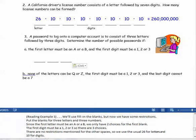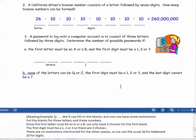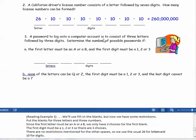Three letters, blanks for three numbers or digits. Since the first letter must be an A or B, we only have two choices for the first blank. The first digit must be a one, two, or three, so there are three choices.